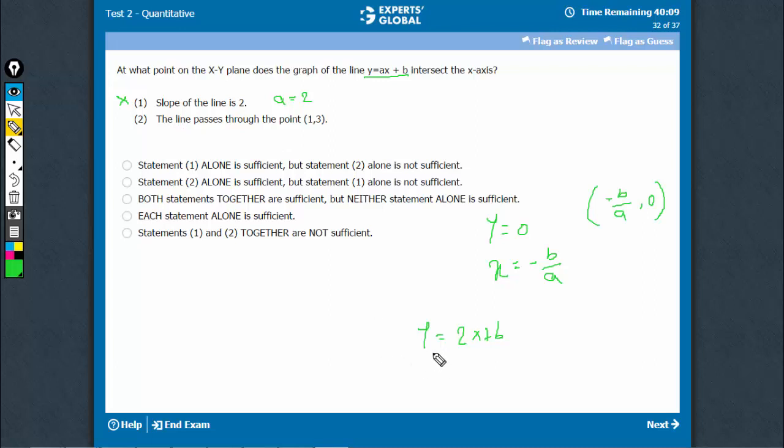If we put 1, 3 in this equation, this should suffice. So 3 equals 2 into 1 plus b. I'm sorry, I've used this already. That's not correct.